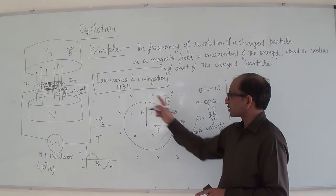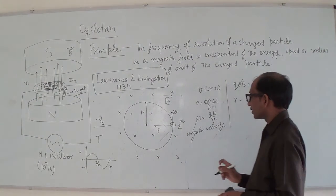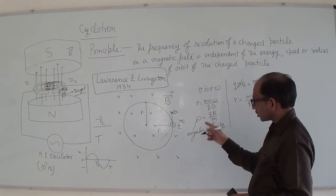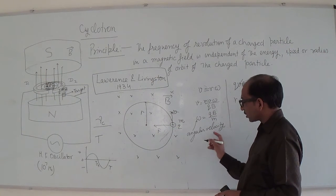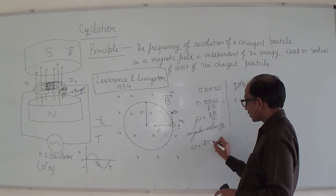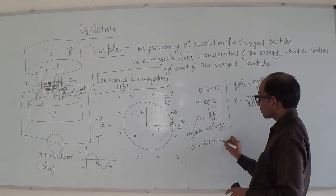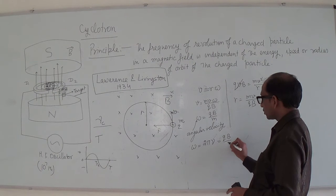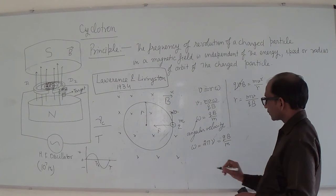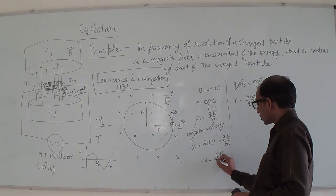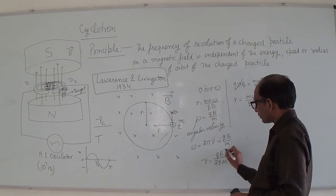The angular frequency omega tells how many cycles are completed in one second. Omega is the angular velocity and is related to the angular frequency by omega equals 2*pi*mu. So mu equals qB/(2*pi*m).